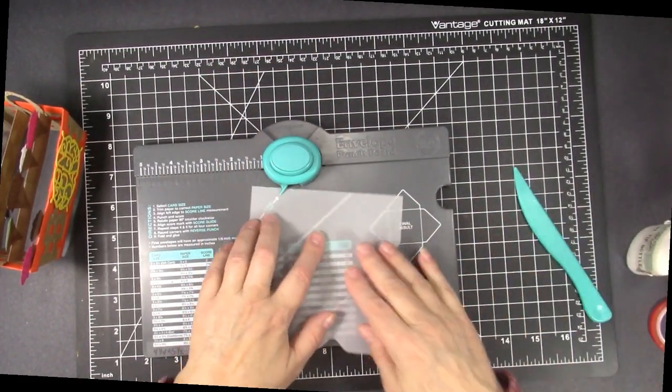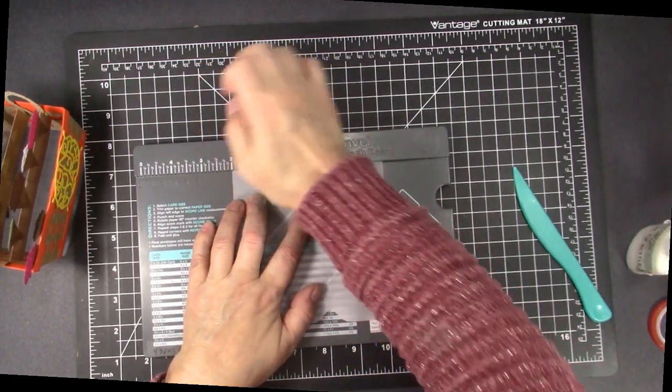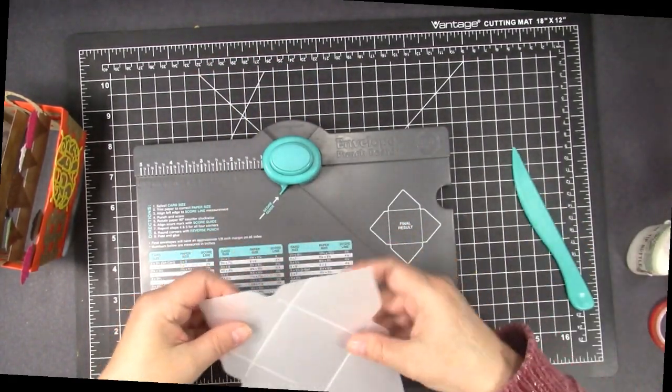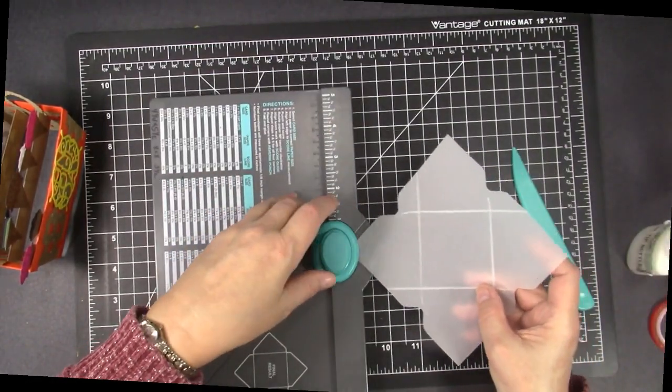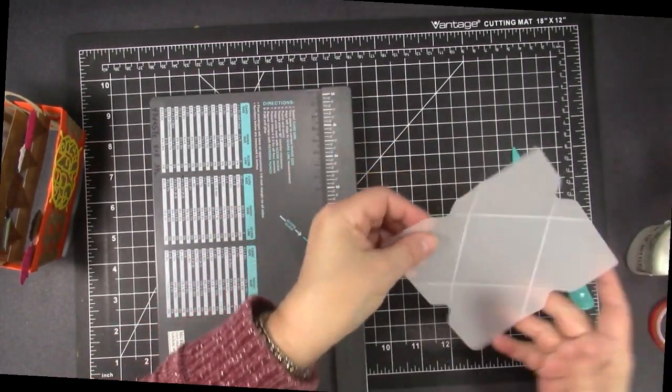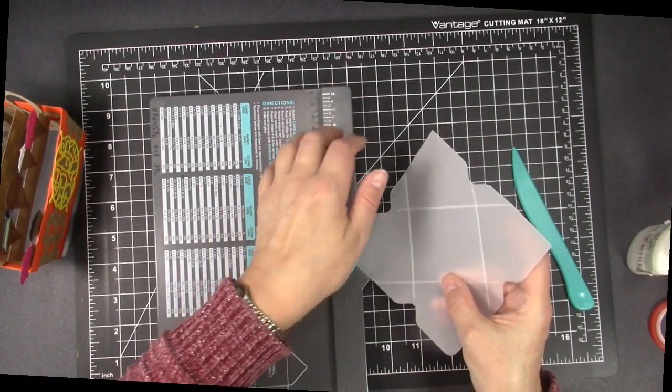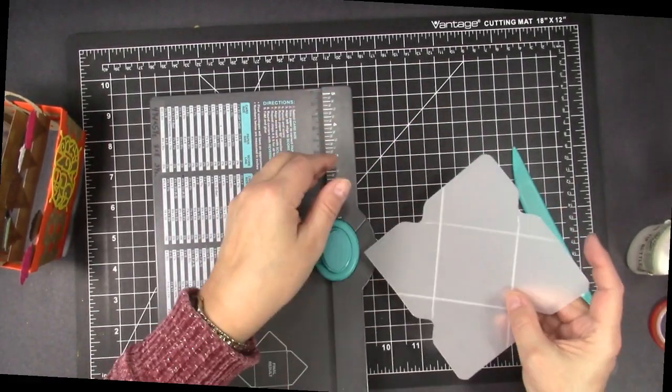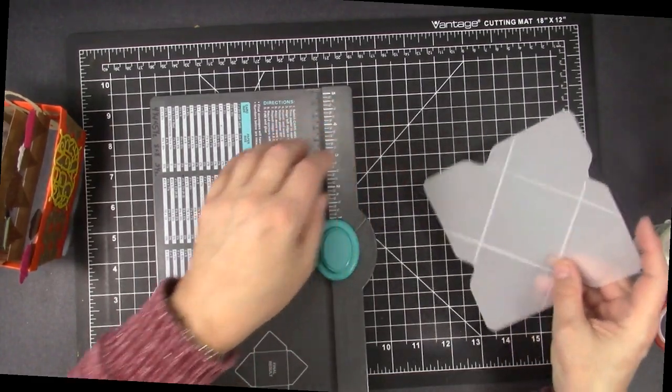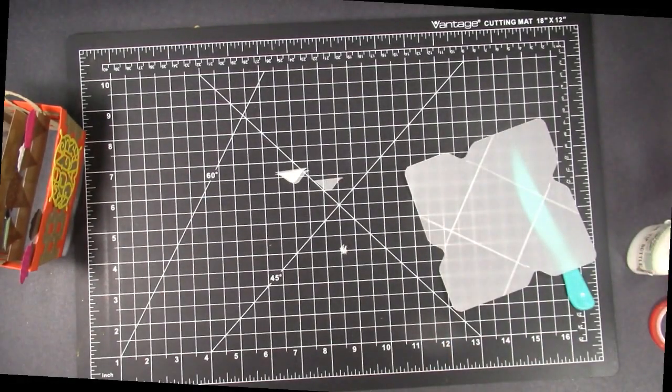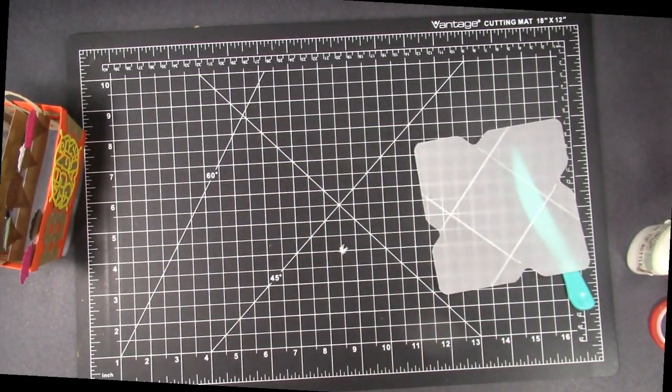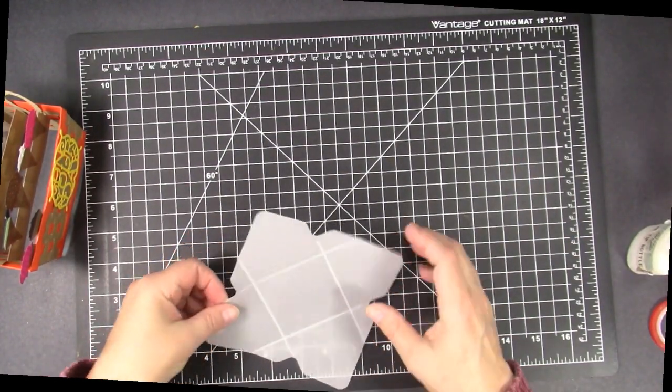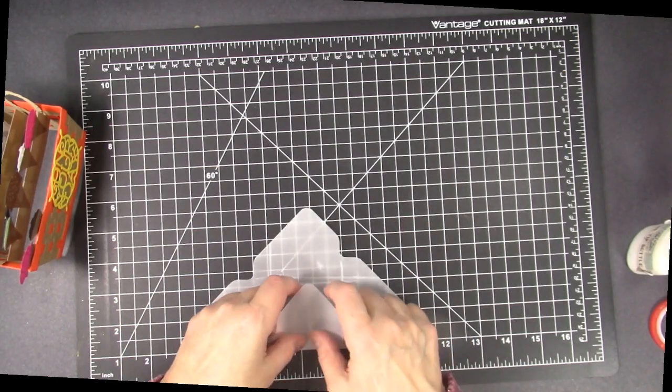And then you punch and then you can also use this rounding feature in here to round all your corners. I hadn't pulled that out in a while. I think I'm going to have to play with it again because you can make cool boxes and envelopes and everything.